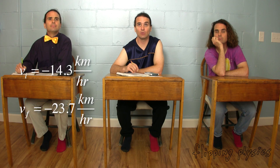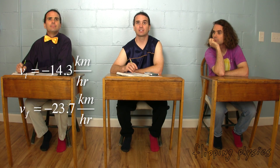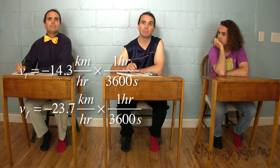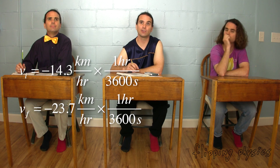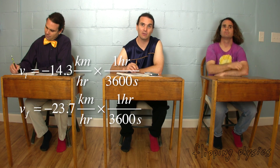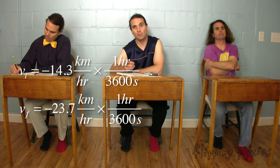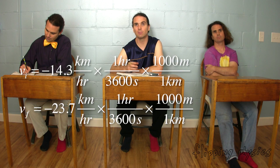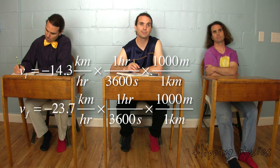We learned last time that kilometers per hour and seconds don't match very well, so let's convert both of the velocities to meters per second. We know there are 3,600 seconds in an hour, so multiply both velocities by 1 hour over 3,600 seconds to cancel out the hours. And we also know that there are 1,000 meters in 1 kilometer, so multiply both velocities by 1,000 meters over 1 kilometer to cancel out the kilometers.